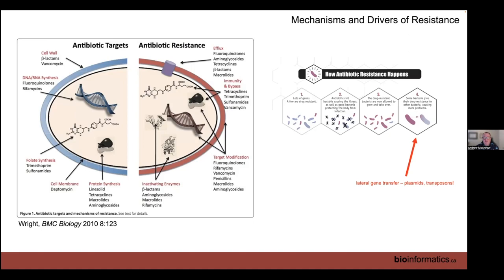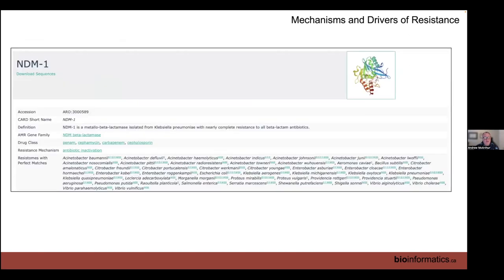The elephant in the room in AMR is lateral gene transfer. AMR is created by overusing or misusing antibiotics, but what makes this worse is that resistance genes often become associated with mobile genetic elements such as plasmids. This changes the game — an infection in one pathogen can suddenly spread to many. NDM-1, a gene that undermines one of our last-resort antibiotics, was discovered in one patient in northern India, spread to England as a hospital-acquired infection, and is now found in over 30 pathogens globally due to plasmids.